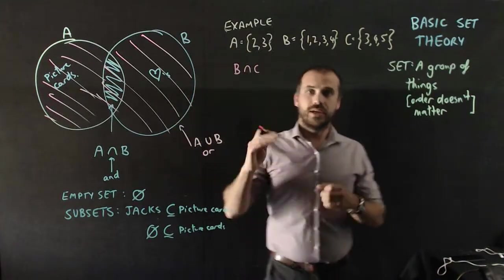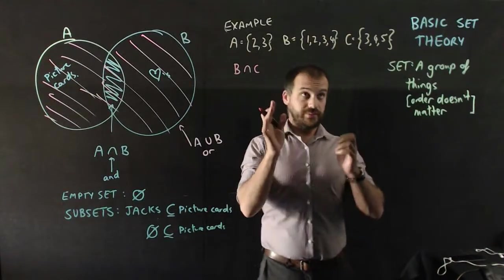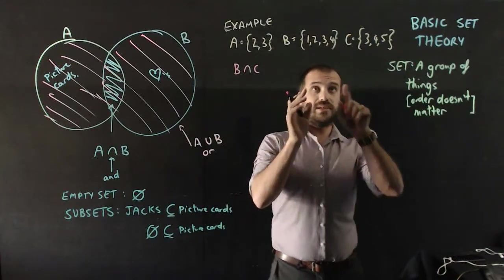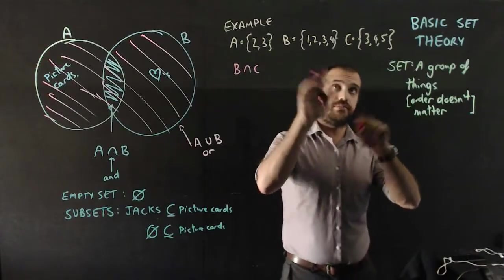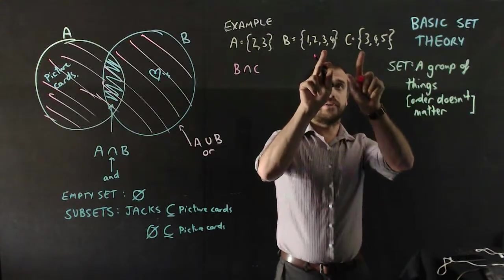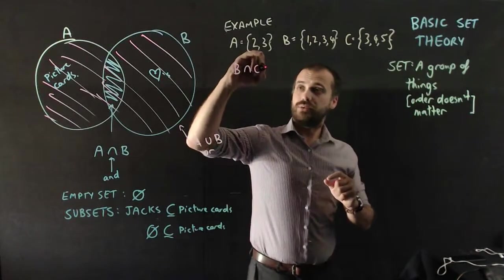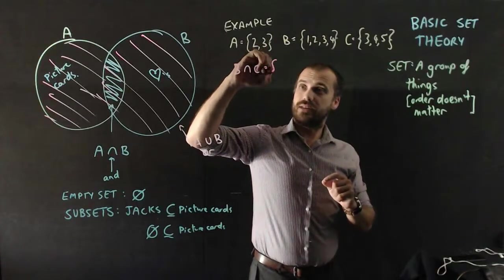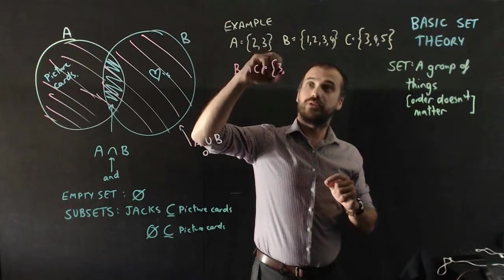That's B and C. Things that are in B and C. 1 is only in B, 2 is only in B, but 3 and 4 are in B and C. So we can say that it's the set {3, 4}.